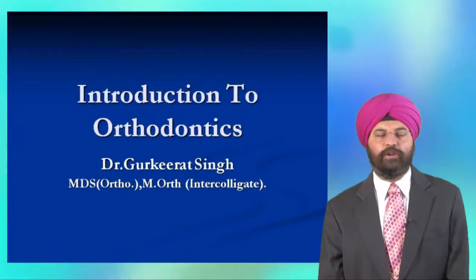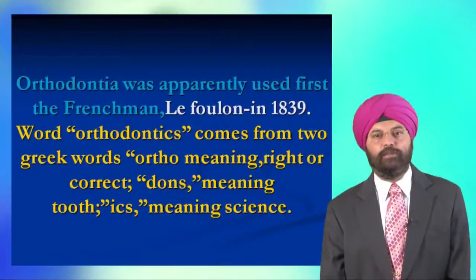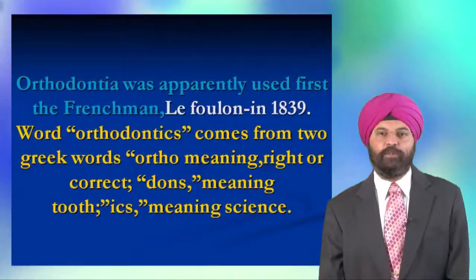Introduction to orthodontics. We are going to start with the word orthodontia. It is a combination of two Greek words — 'ortho' meaning right, and 'donts' meaning teeth. So it means right set of teeth, and the idea of right alignment was added to it at a later stage.